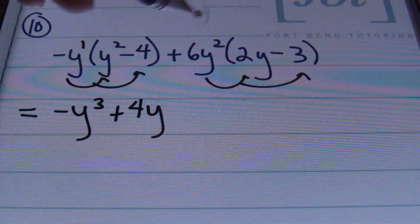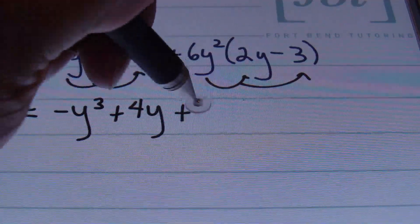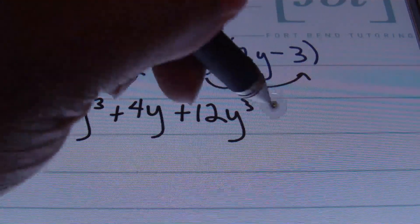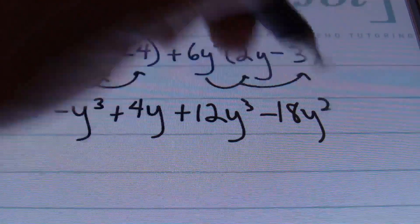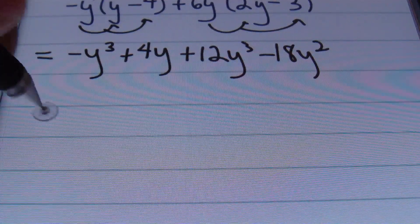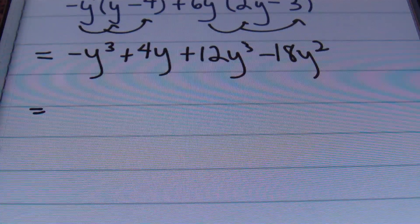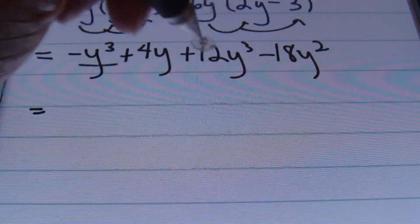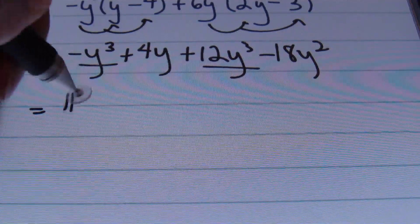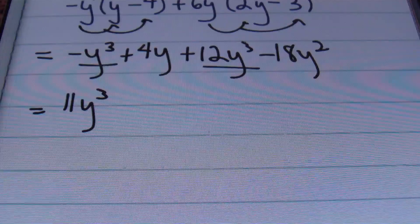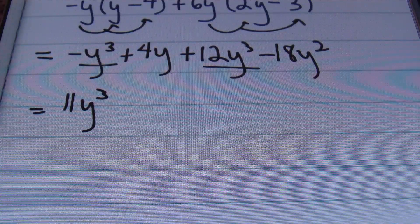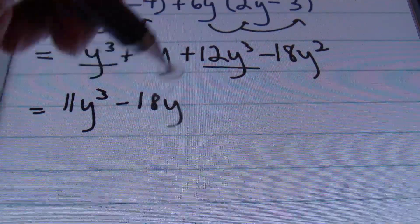And in the second term, I'll be distributing 6y squared. Multiplying 6y squared times 2y gives me a positive 12y cubed. And 6y squared times negative 3 gives a negative 18y squared. So this is our result after we finish distributing. From there, I'll write my answer in descending order as I combine my like terms. Starting with the y to the third power terms: this is a negative 1 and a positive 12. 12 minus 1 is 11, so I end up with 11y cubed. Then the next in line is my y squared term, but I don't have any like terms, so it's just a negative 18y squared.